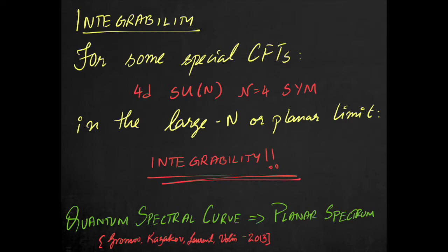Luckily, some special CFTs like 4d SU(N) N=4 super Yang-Mills in the planar limit admit a structure called integrability. This allows one to write down its so-called quantum spectral curve, the topic of this video. It is also a proud moment for us to note that one of the inventors of the quantum spectral curve is our very own Nikolai Gromov.